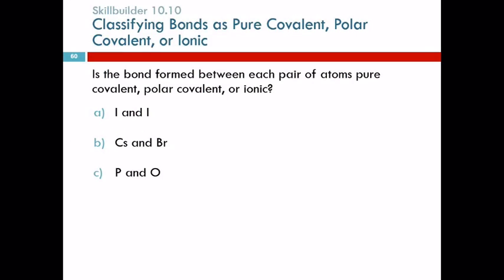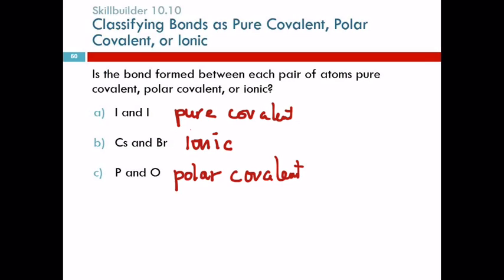So if we have iodine and iodine, is that going to be pure covalent, polar covalent or ionic? Pure covalent because those are the same. Of course they're going to share equally. Pure covalent. How about cesium and bromine? Are they metals or non-metals or what? It's going to be ionic because cesium is a metal, bromine is a non-metal. A metal and a non-metal is ionic. How about phosphorus and oxygen? Polar covalent. These are two non-metals, but they're different. So most likely polar covalent. So that kind of ties back to things we learned about in nomenclature.